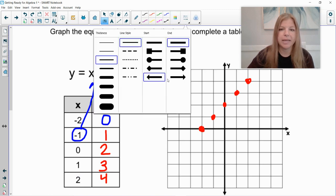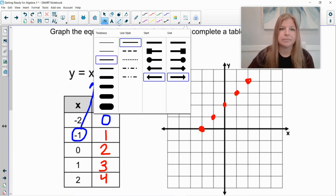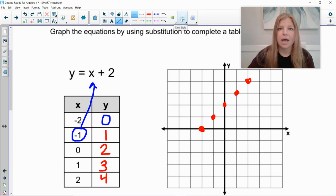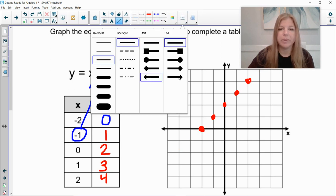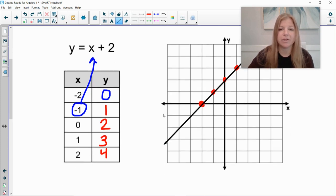I would go ahead and connect my points together and make my—that's a terrible line. I would then go ahead and connect my points to make my line. And I have my graph. That's how easy it is. Let's take a look at another one.